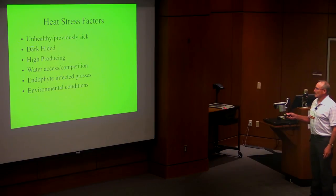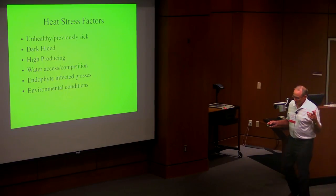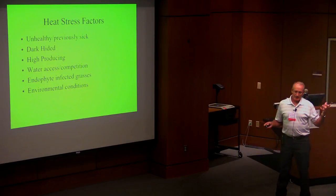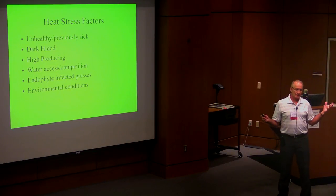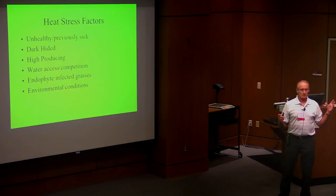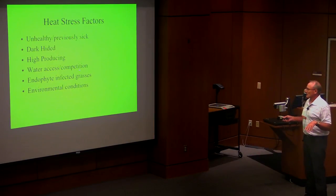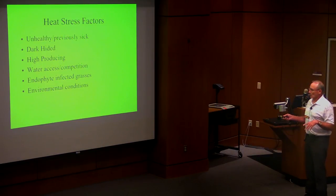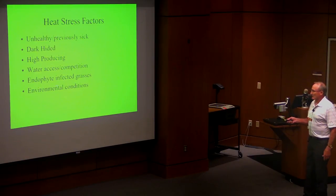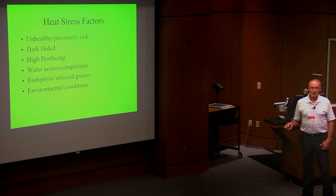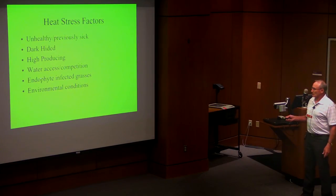Some of the risk factors most of you are aware of: unhealthy, previously sick animals, and dark-hided cattle. We can take a black animal on a sunny day and the surface temperature of his hide will be about 120 degrees, while a white animal will be close to ambient — about 100 degrees. High-producing animals and water access are big components of keeping animals alive and comfortable. Endophyte-infected grasses and pastures are a problem because of restrictions on the cardiovascular system, and of course environmental conditions.